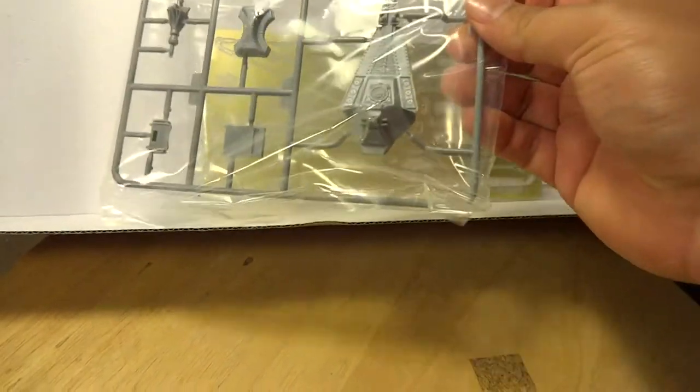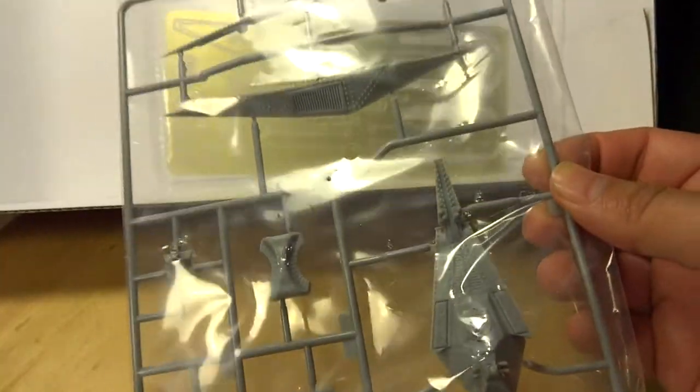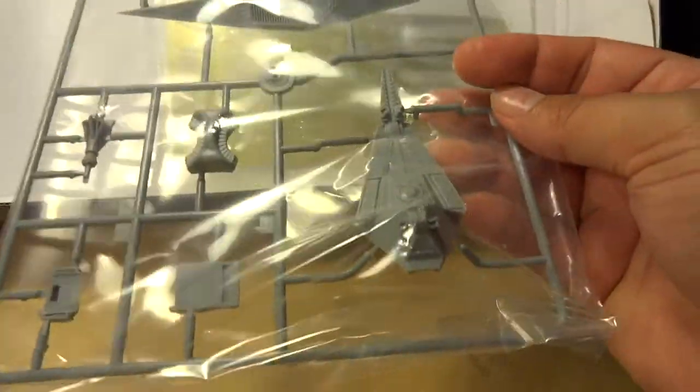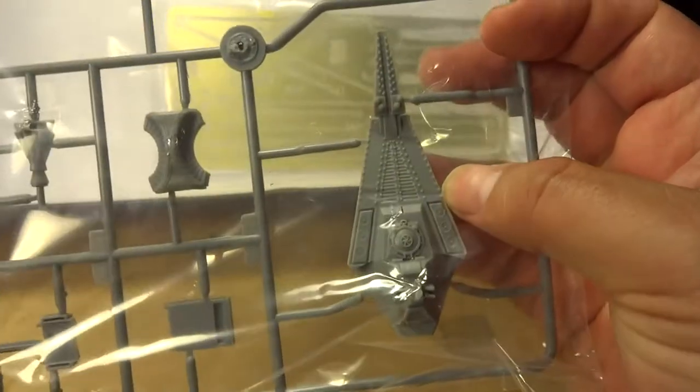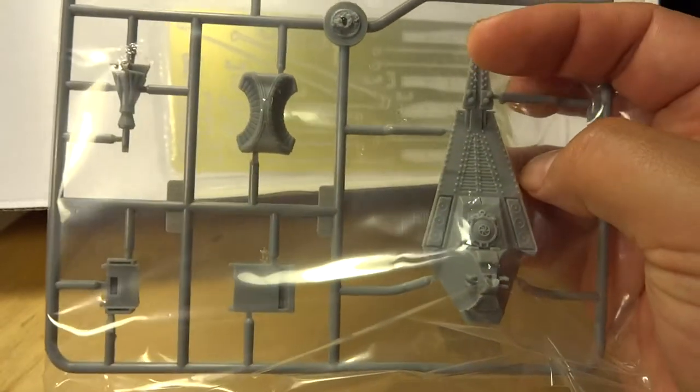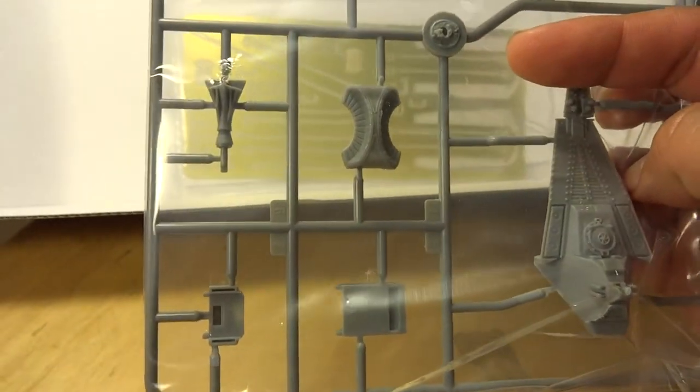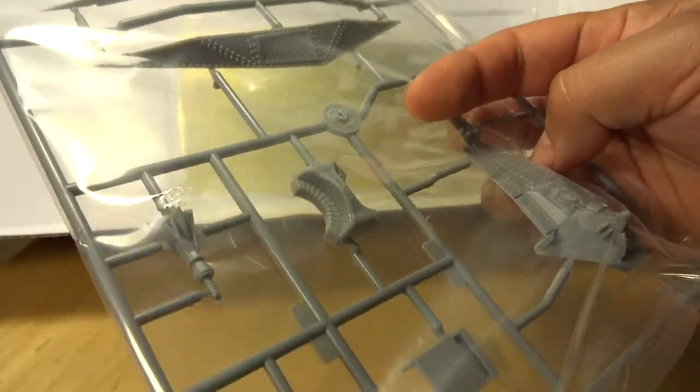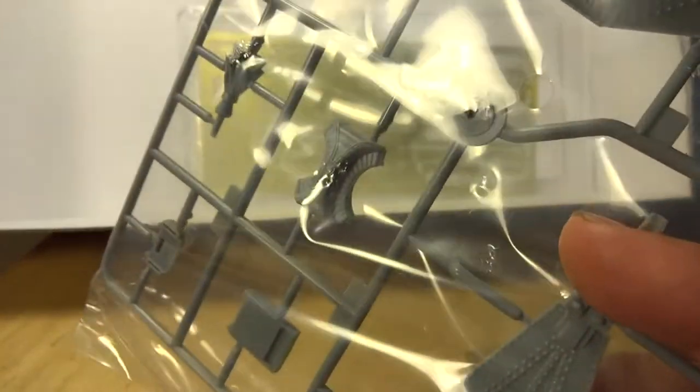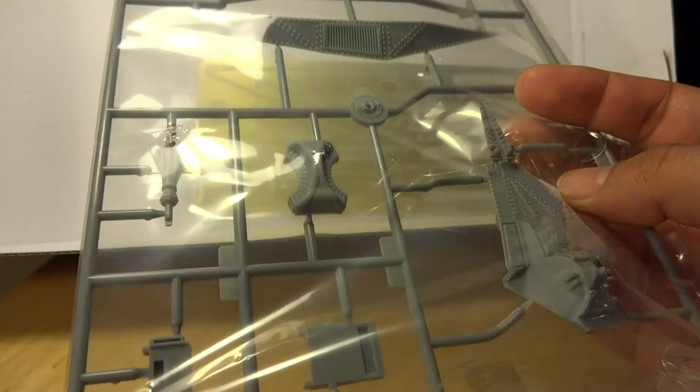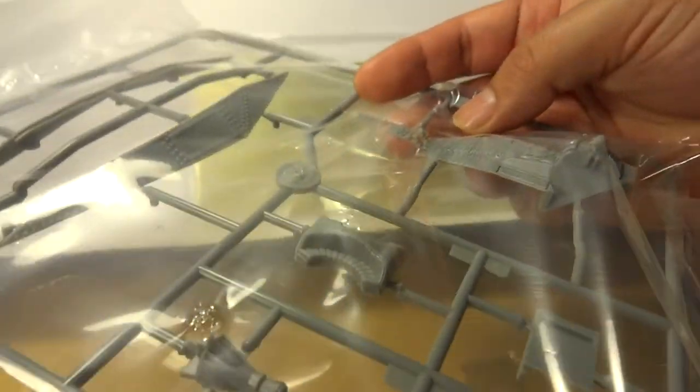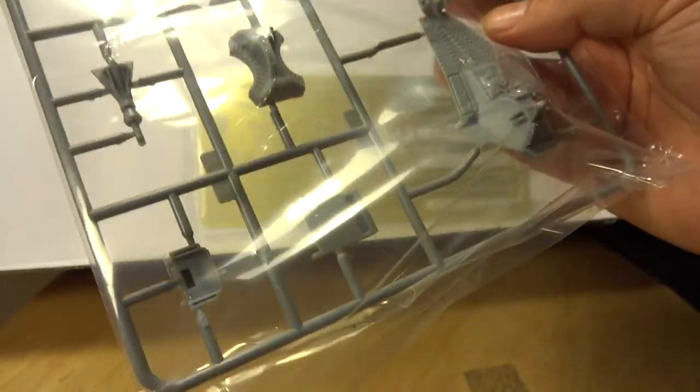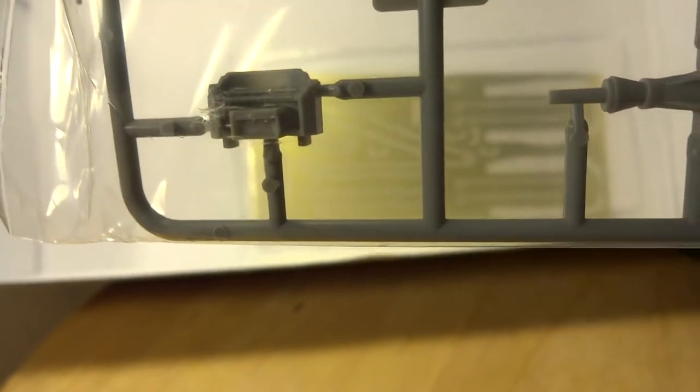Right in here we've got the top piece of the Nautilus. Over in the center, that's going to be the parlor sofa—that's going to be painted red for sure. Right here we've got a desk and what looks to be a small organ.